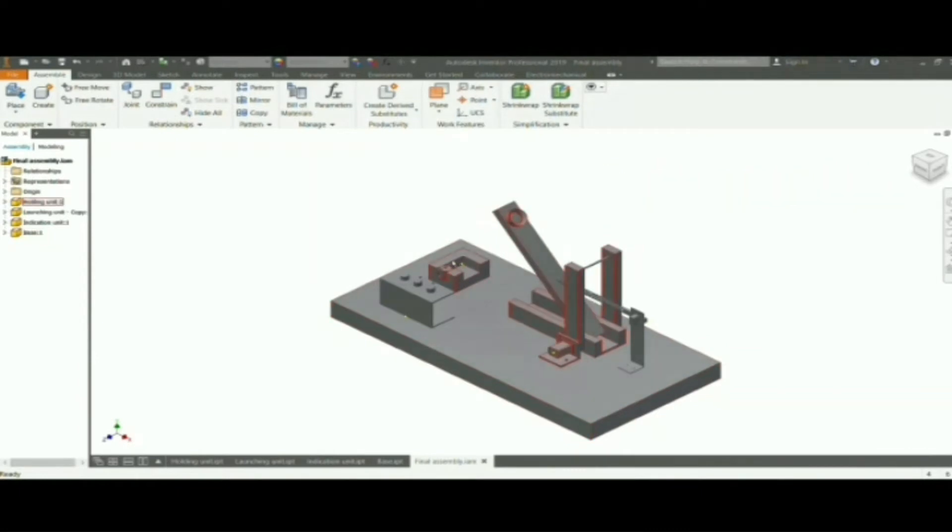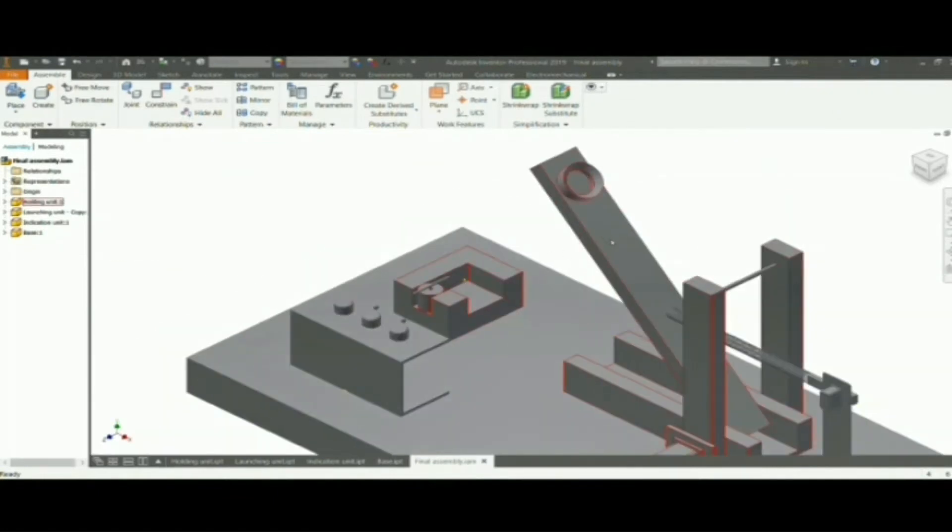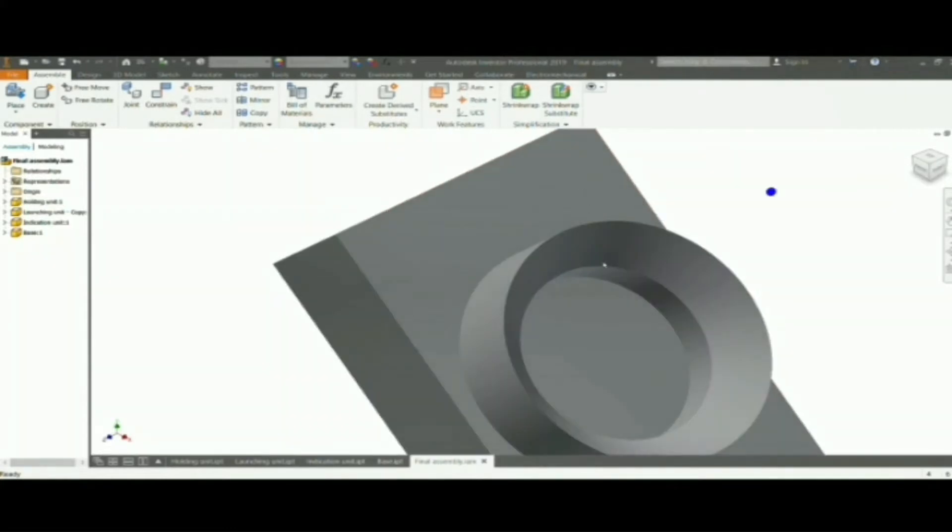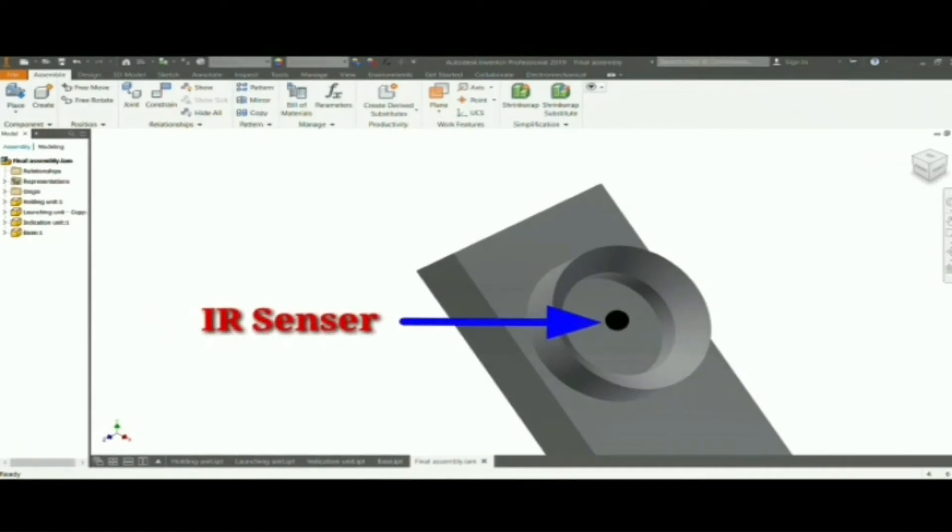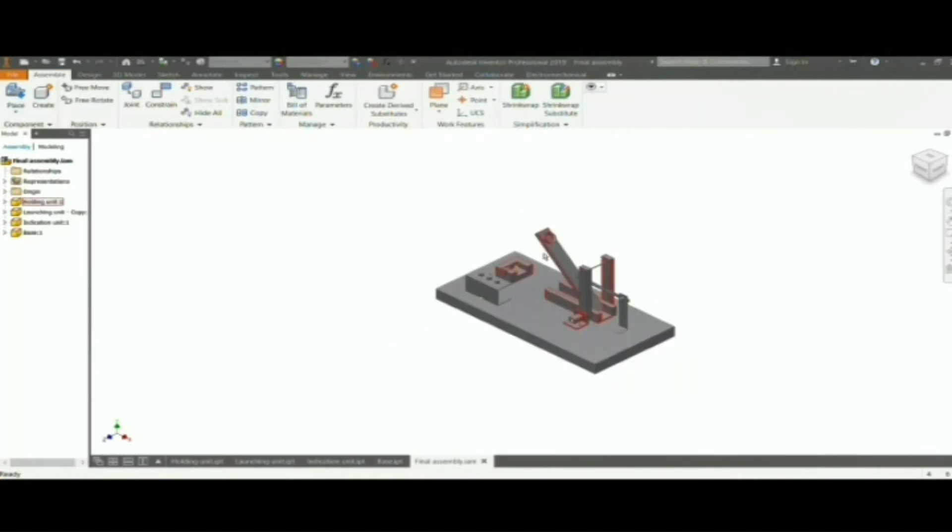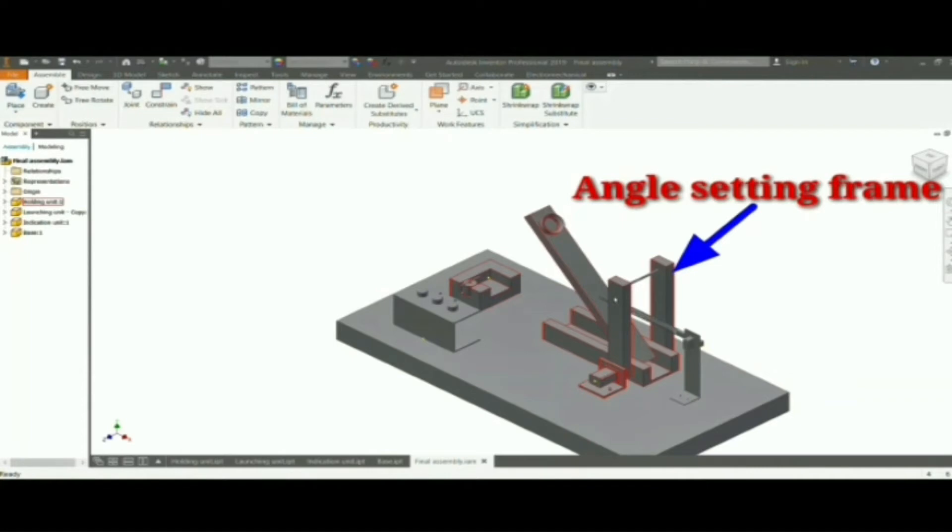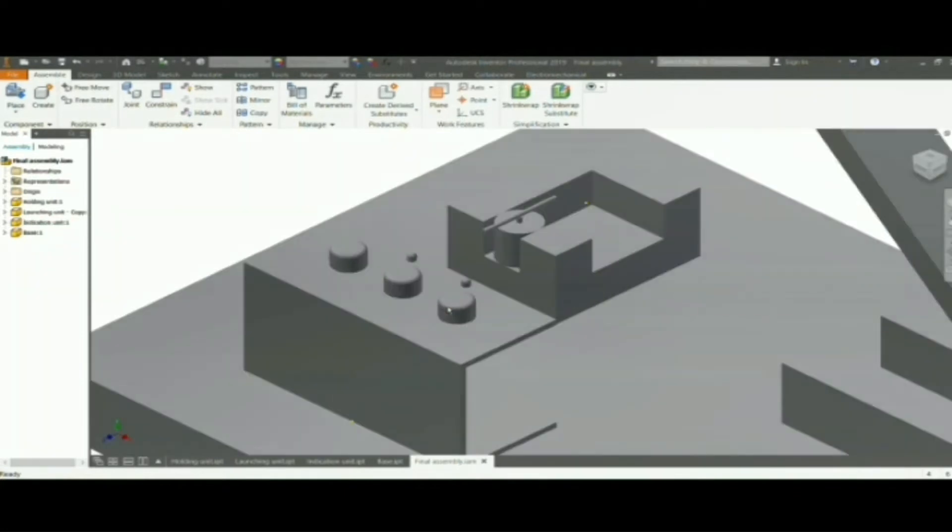The holding unit consists of locking system in which a toy servo is used to lock and unlock the launching pad. There is the launching pad to launch the ball. This is the holding cup to hold the ball. And here we placed an IR sensor to sense the presence of ball. This vertical frame is angle setting frame which is connected to servo 2 and operated by the potentiometer.